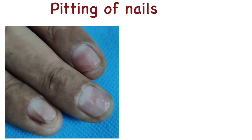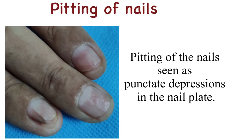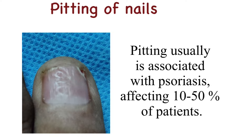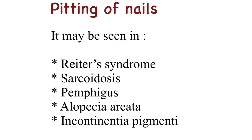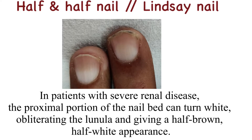Pitting of the nails is seen as punctate depressions in the nail plate. It is usually associated with psoriasis, affecting up to 10–50% of these patients. It can also be seen in Reiter's syndrome, sarcoidosis, pemphigus, alopecia areata, and incontinentia pigmenti.